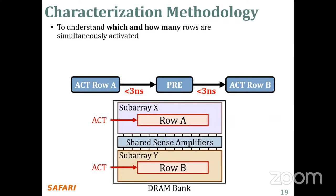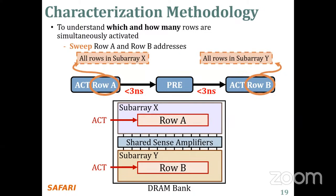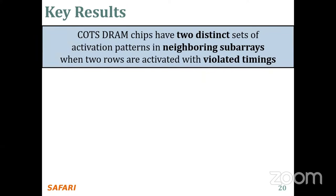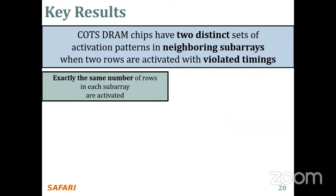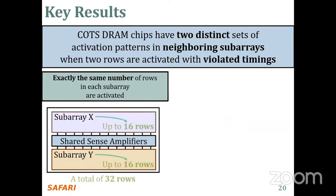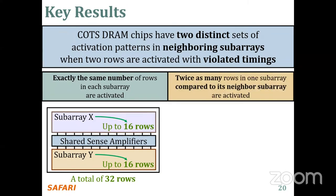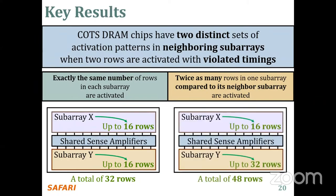To rigorously characterize which and how many rows are activated, we sweep two key parameters: row A addresses, testing all rows in subarray X, and row B addresses, testing all rows in subarray Y. We observe two distinct simultaneous activation patterns. The first pattern is that exactly the same number of rows in each subarray are activated — up to 16 rows in each, totaling 32 rows. The second pattern is that twice as many rows in one subarray are activated compared to its neighbor — up to 16 rows in one subarray while activating 32 rows in the neighboring subarray, totaling 48 rows.